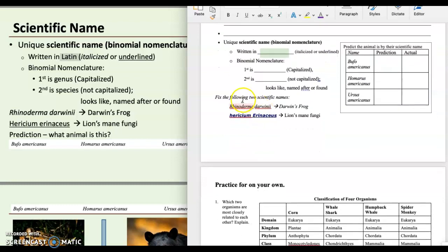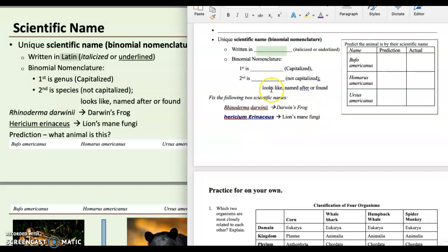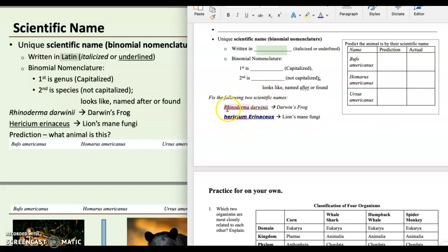Rhinoderma darwini is Darwin's frog. So what's wrong with these? Well, we have italicized. We need that. Good. First one is capitalized. Good. Second one is not capitalized. Huh, actually that one's okay. So we're good to go there.